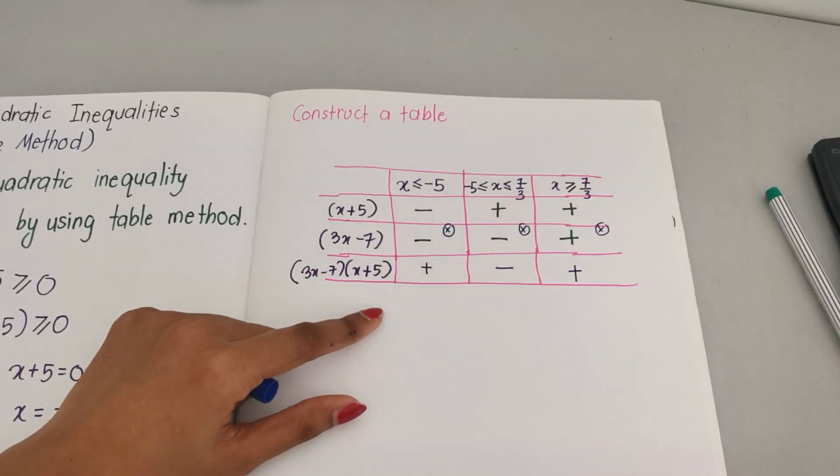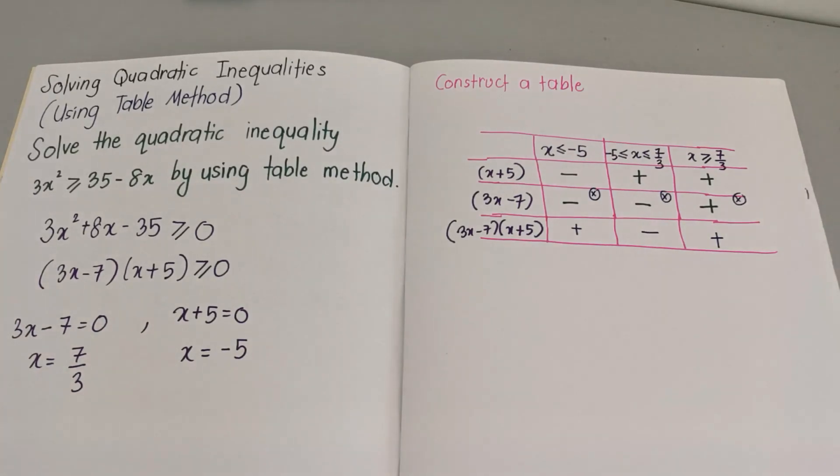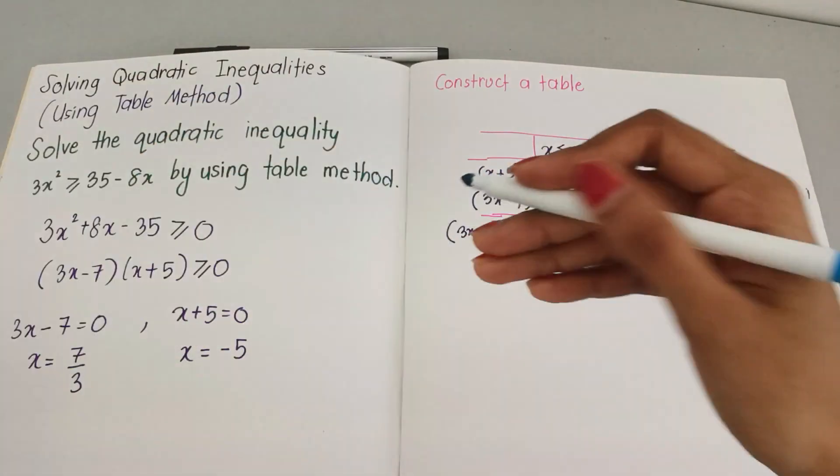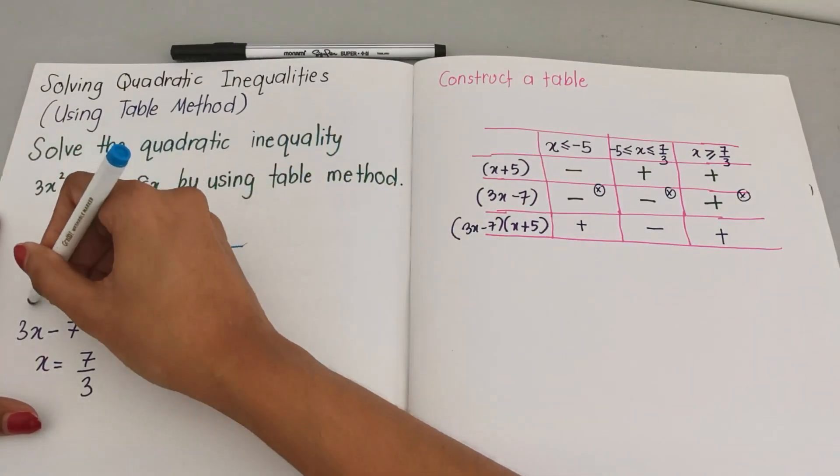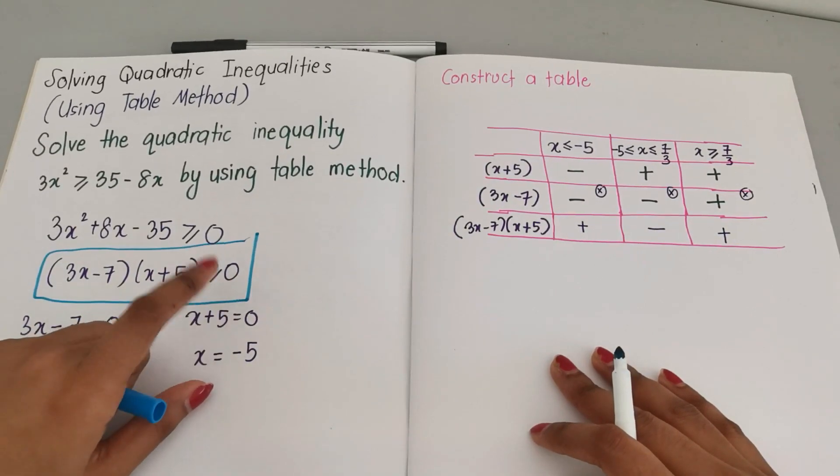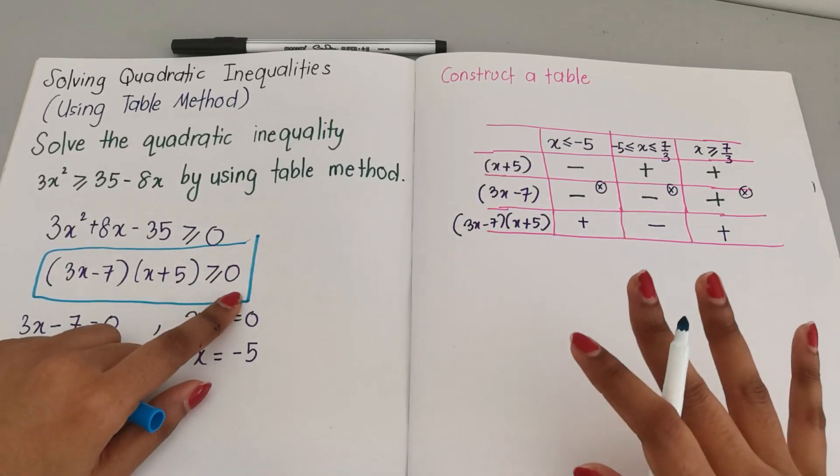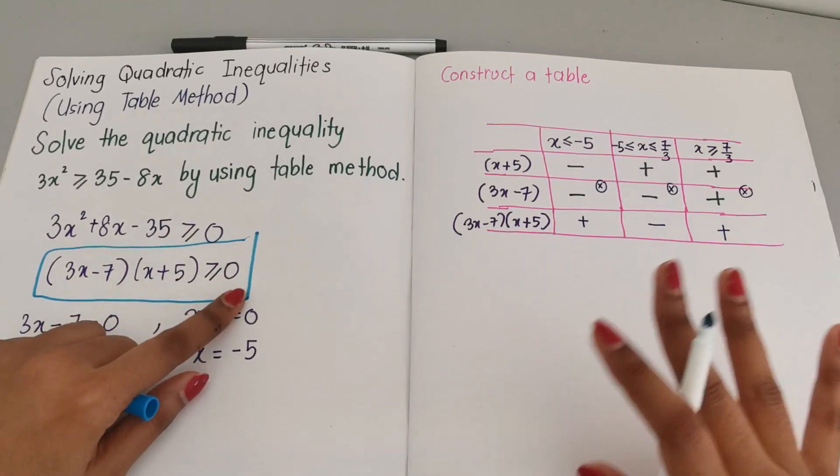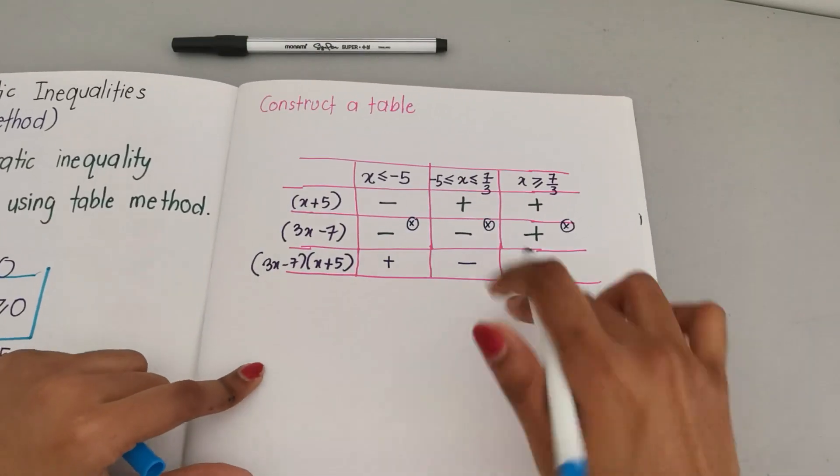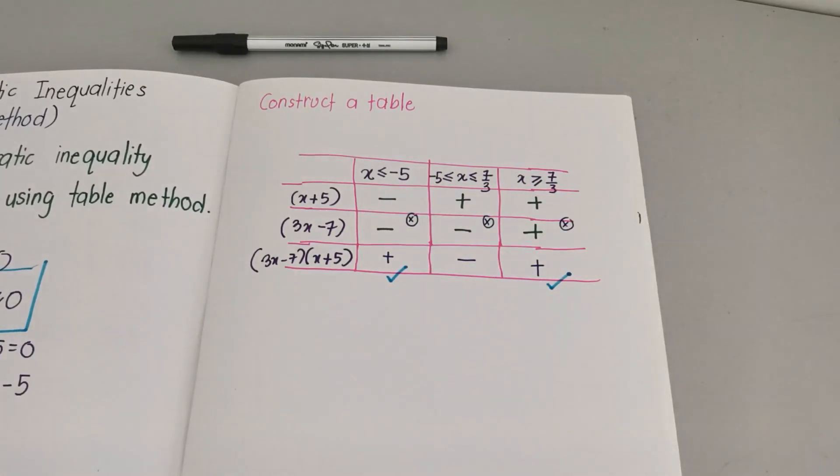This is where we are going to choose our inequality. How do we choose? We have to look back at our inequality here. As you can see it's greater than and equals to zero, that means our inequality must be in the positive range.